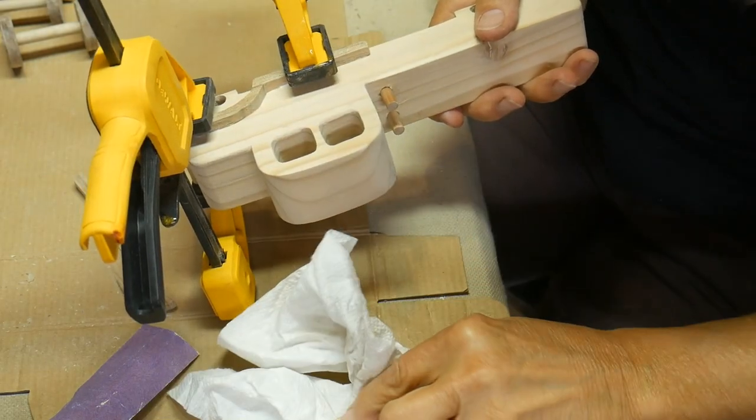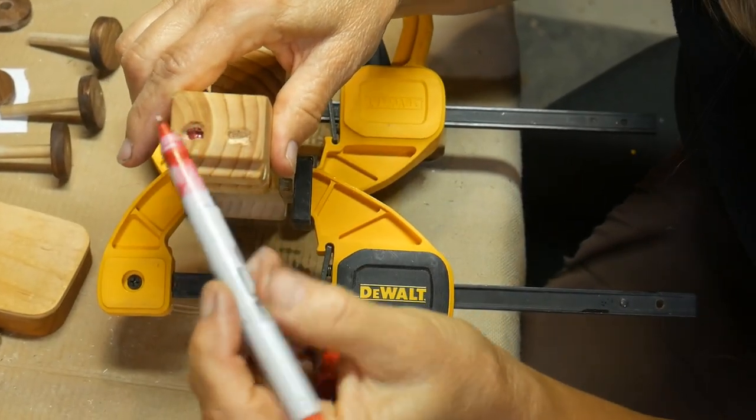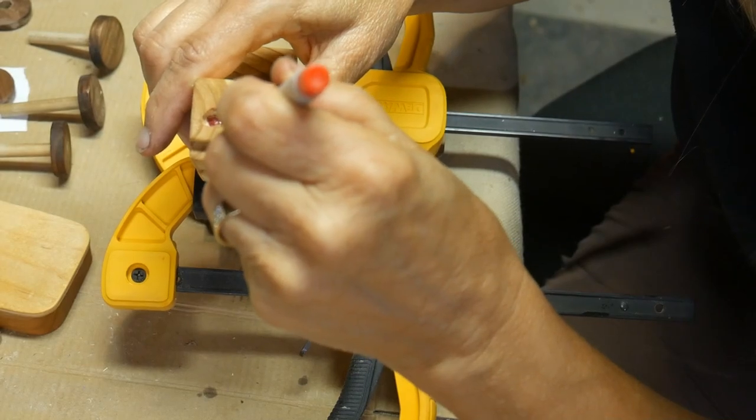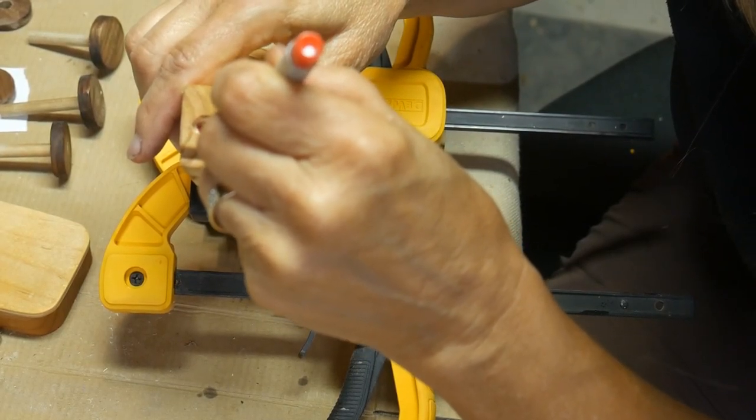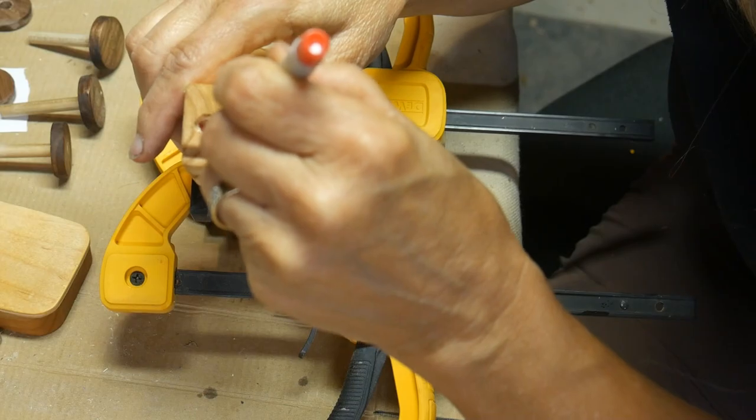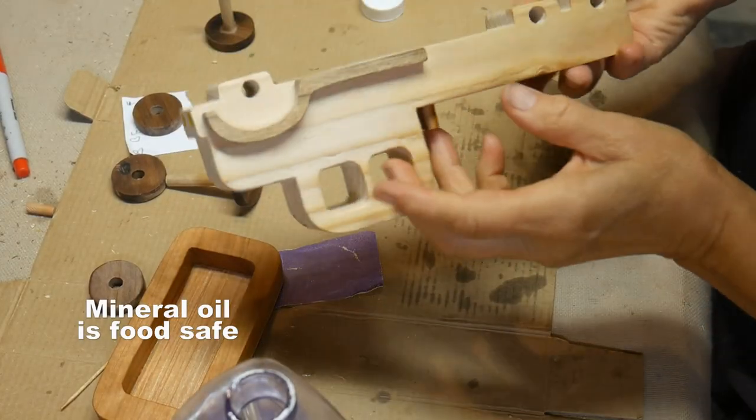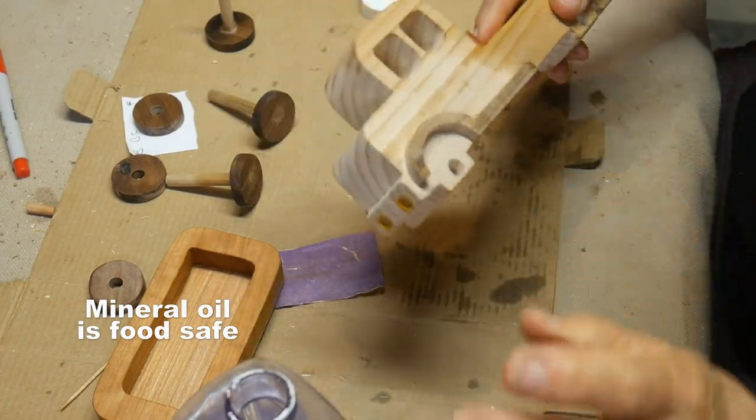I'm using a permanent ink sharpie just to put red for the tail lights and I'll use yellow for the headlights. The fenders are kind of cute, I like them.